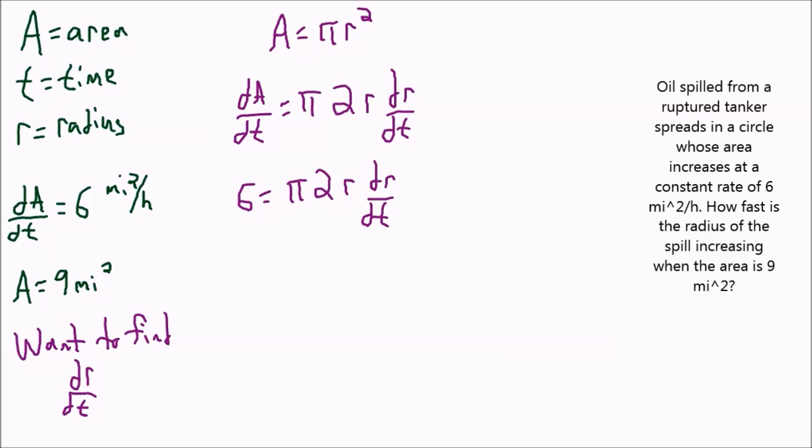Nothing in the problem tells me what R is at this point in time. But since we're told what the area is, we can find out what R is. So over here, down in the corner, we'll say A equals pi R squared. And at this point in time, area is equal to 9. So 9 equals pi R squared. So dividing both sides by pi, we're going to have 9 over pi equals R squared. So therefore, R equals square root of 9 over the square root of pi. The square root of 9 is just 3, so 3 over the square root of pi.